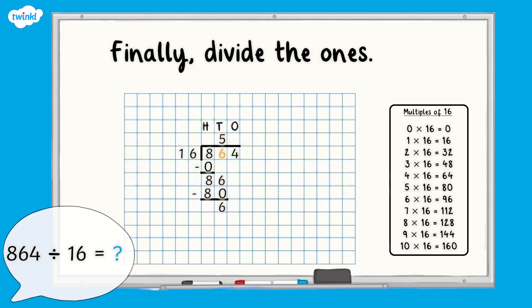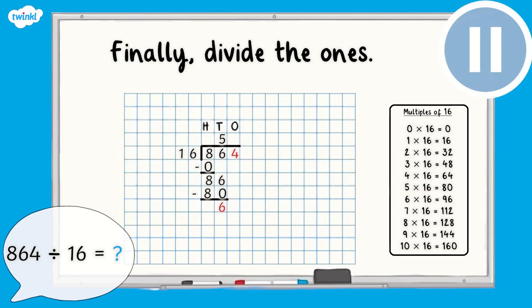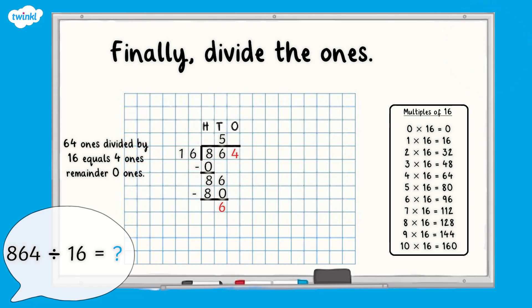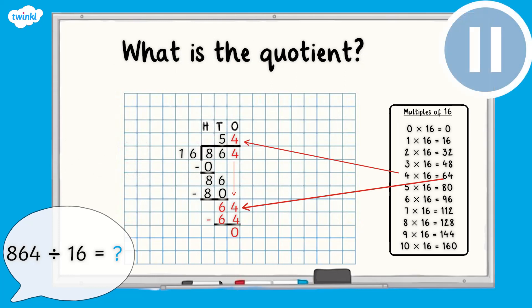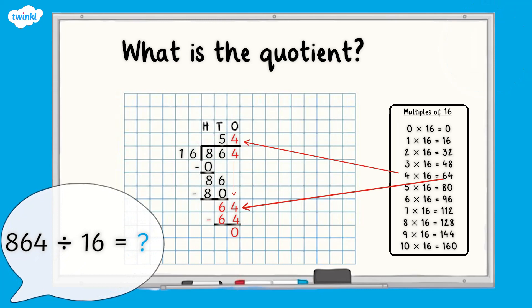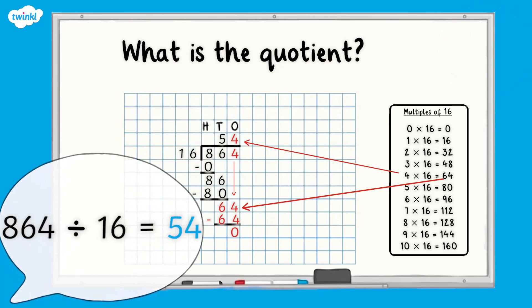And finally, divide the ones. 64 ones divided by 16 equals 4 ones, remainder 0 ones. What is our answer or quotient when 864 is divided by 16? 864 divided by 16 equals 54.